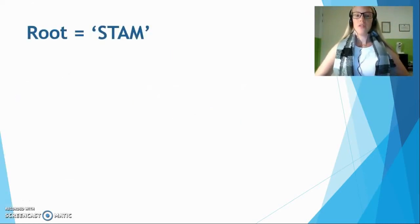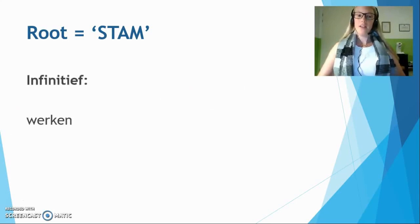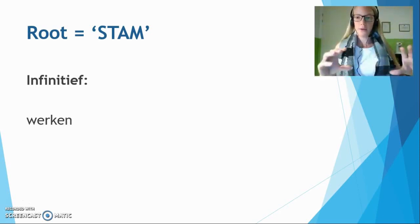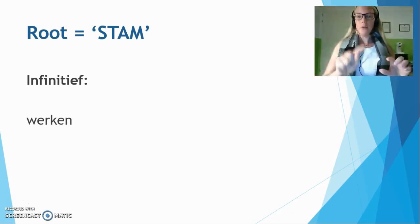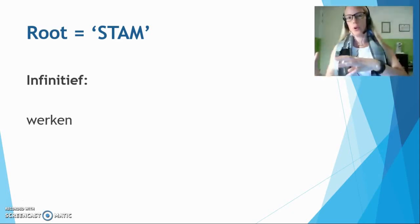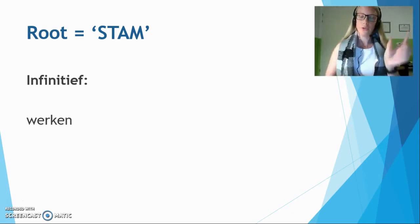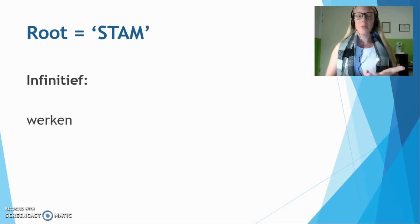So, root in Dutch is referred to with stam. You will find this in many lesson books, so I will be working with that as well. The other term that we will see in this video is the infinitive. That means that I'm talking about the complete verb, the verb that is ending with -en in Dutch. All verbs end with -en. In English it would be 'to work', for example — they will have the word 'to' before it. The infinitive is also the basic form of the verb in which you will find it in the dictionary.